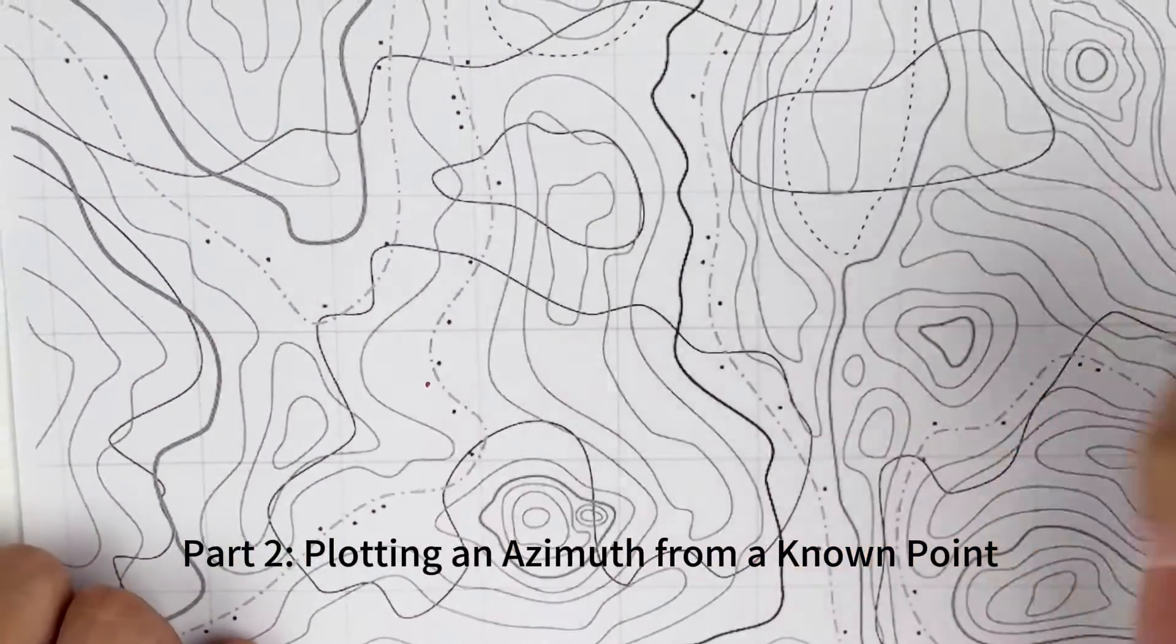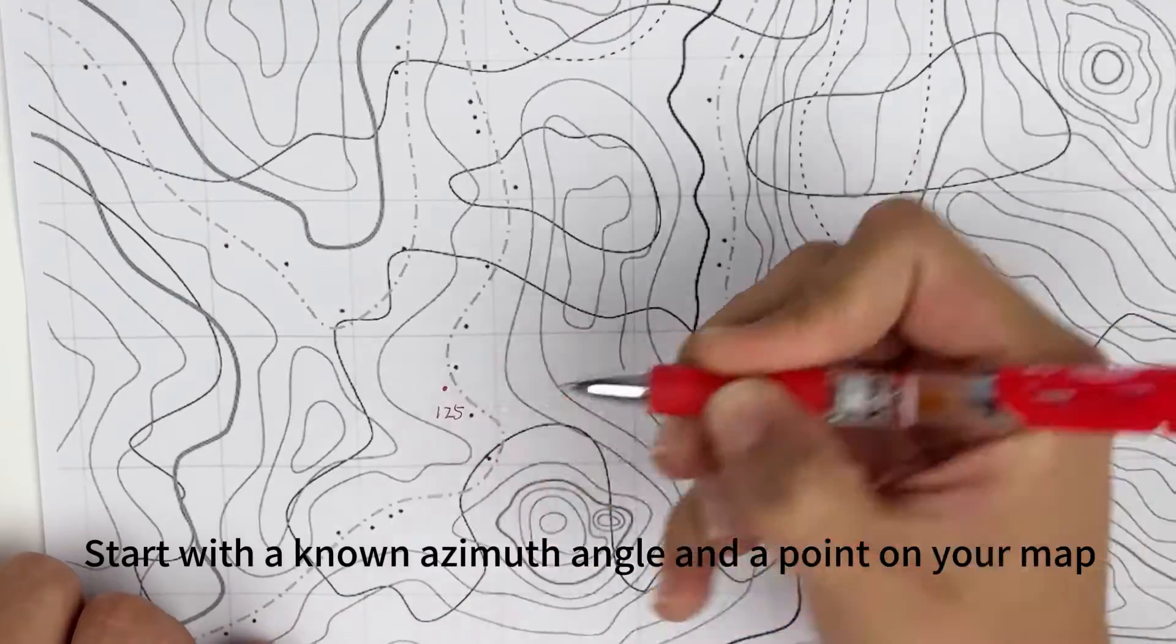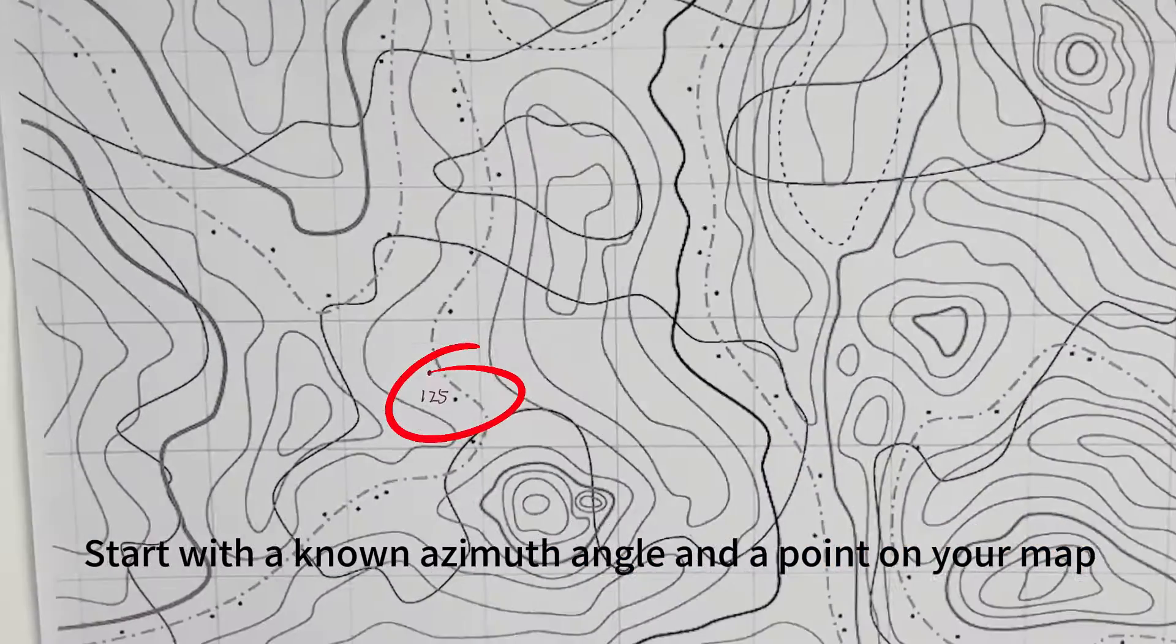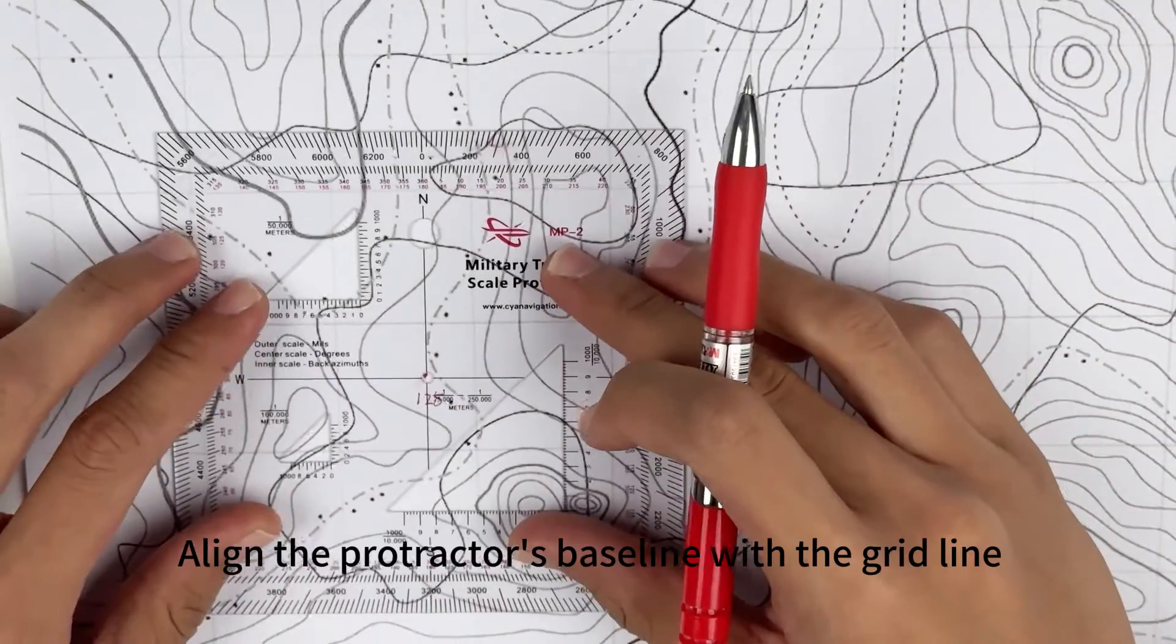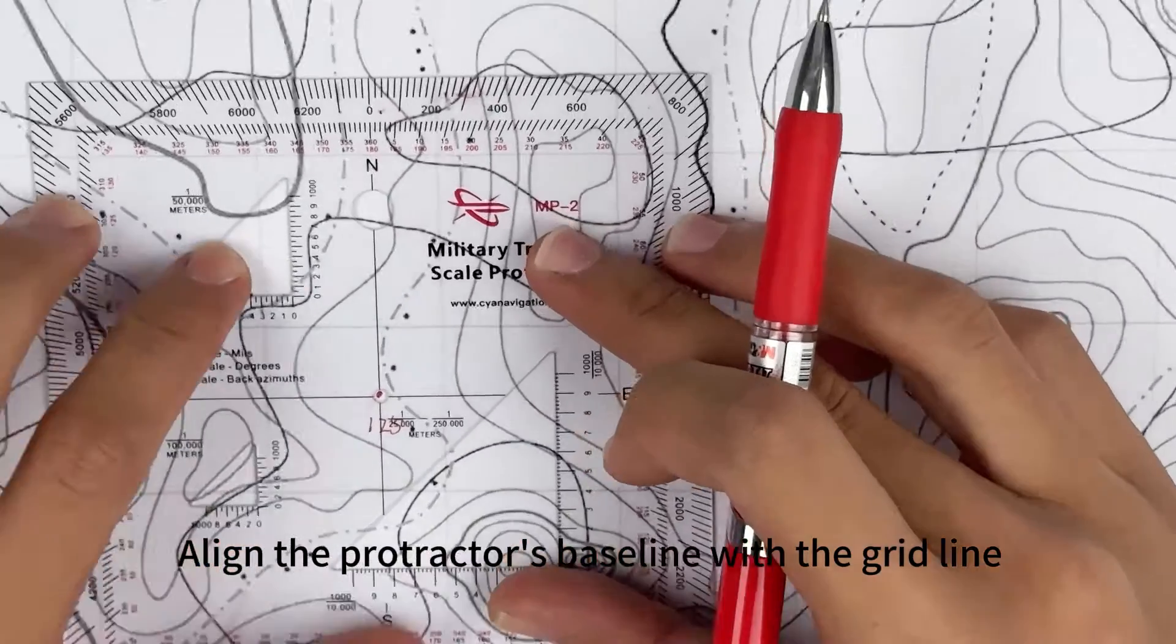Part 2: Plotting an azimuth from a known point. Start with the known azimuth angle and the point on your map. Align the protractor's baseline with the grid line.